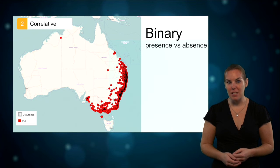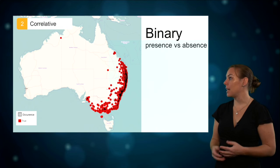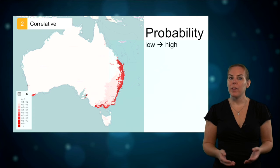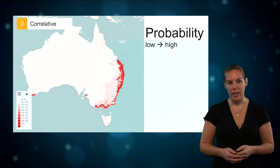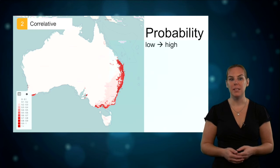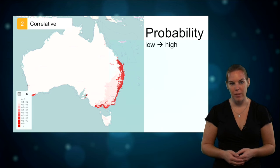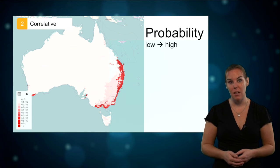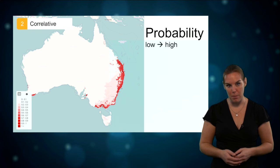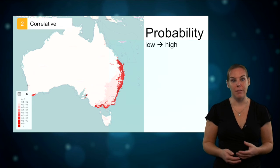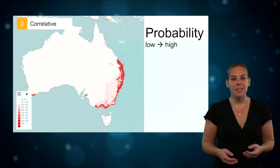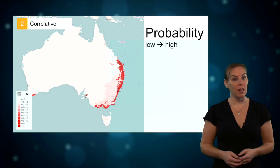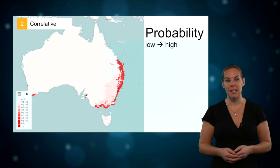This can either be displayed as a binary outcome — that means as a presence-absence map — or as a probability on a scale from 0 to 1, with darker coloured areas representing a higher likelihood that a species can occur in that place. It's important to note that these maps do not show actual occurrences of a species, but highlight areas that have similar environmental conditions to areas where we have already found the species. Thus it's an estimation of where a species can occur, which does not necessarily mean that the species actually exists in that area.